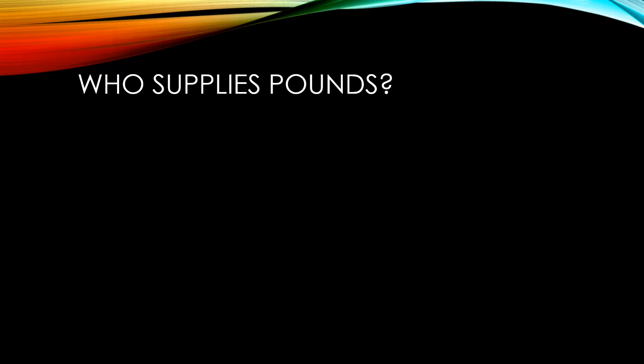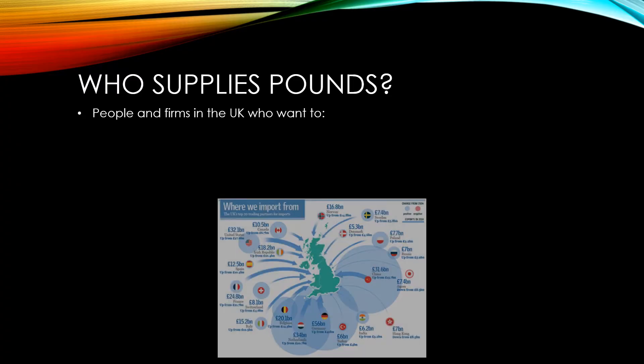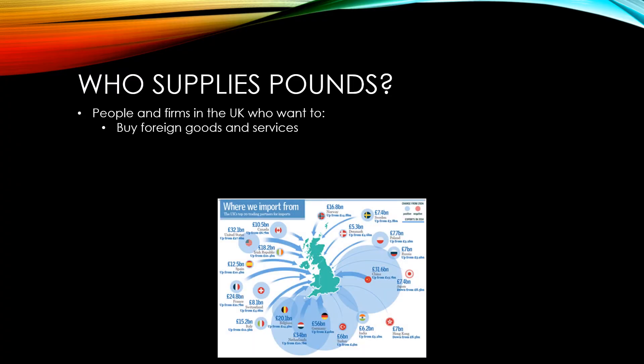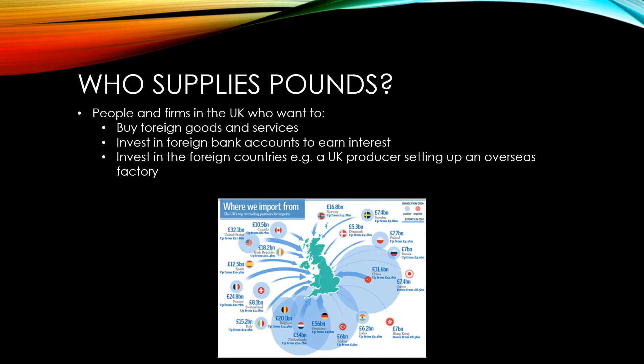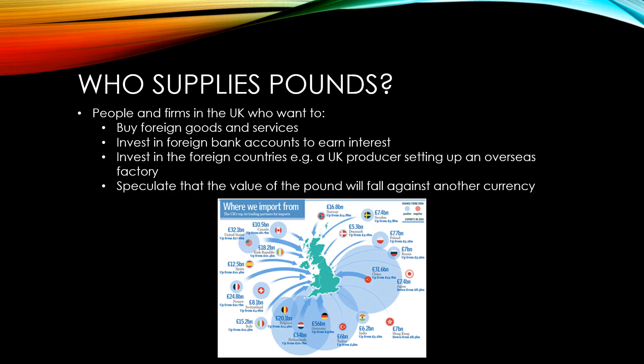The people who supply pounds are people and firms in the UK who want to buy foreign goods and services, or take a trip to a foreign country and spend money while they're there, invest in foreign bank accounts to earn interest, invest in foreign countries such as when a UK producer sets up an overseas factory, or speculate that the value of the pound will fall against another currency.